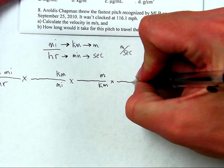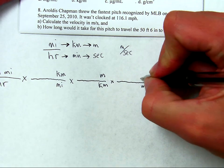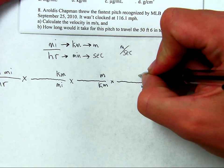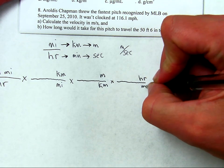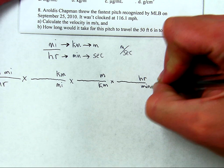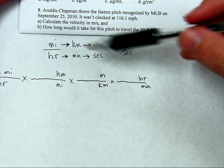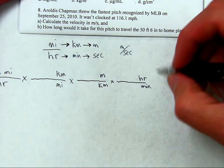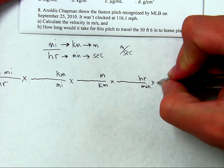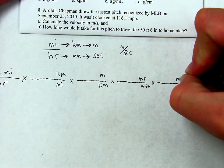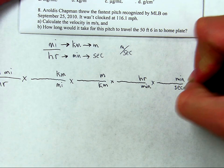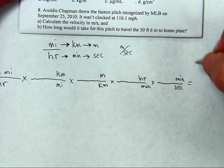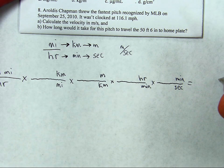Here we go — we're going to have to convert hours into minutes. Notice hours on the bottom cancels hours on top. Then we're going to convert minutes to seconds. And that will give a final answer in meters per second.